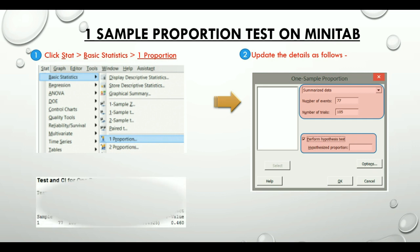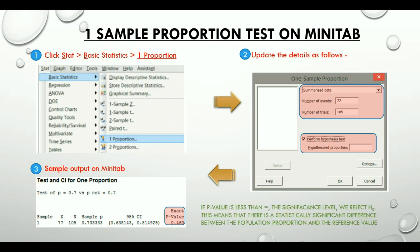Now here is the sample Minitab output. The descriptive statistics we are primarily concerned with is the p-value. If p-value is less than the significance level (that is alpha), we reject the null hypothesis. This means that there is a statistically significant difference between the population proportion and the reference value.